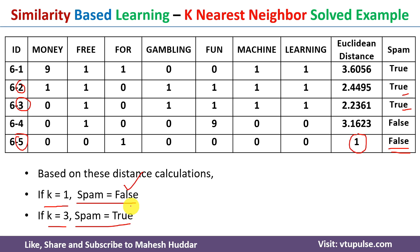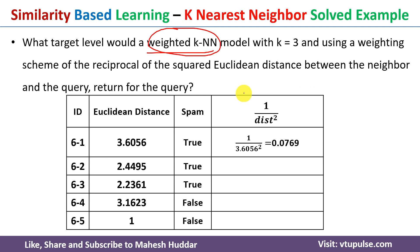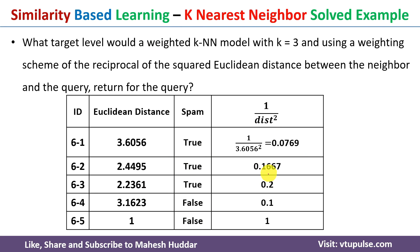Now for the weighted K-Nearest Neighbor algorithm, we still use Euclidean distance, but instead of using the distance directly we calculate a weighted distance defined as 1 divided by distance squared. For example, the distance from example 6 to example 1 is 3.6056, so the weighted distance is 1/(3.6056)² ≈ 0.0769. We compute weighted distances for all examples similarly.